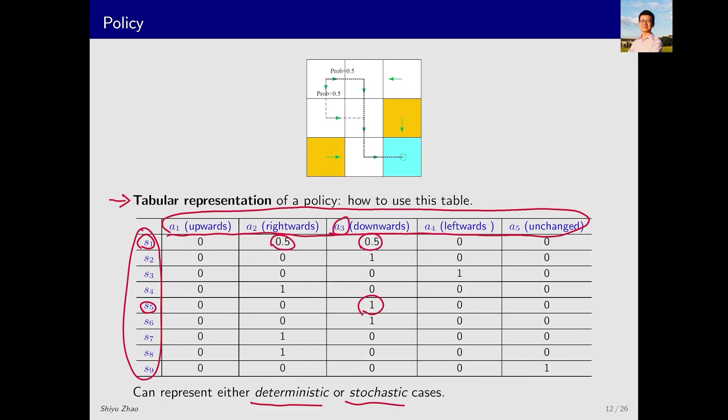Furthermore, I'll explain how policies are executed in practice. If there is a 0.5 probability for taking action A2 and a 0.5 probability for taking action A3, how is this implemented in programming? The process is quite simple. We can do a random sampling from 0 to 1 using a uniform distribution. If the sampled value x falls between 0 and 0.5, then action A2 is taken. If x is between 0.5 and 1, then action A3 is taken. This is the basic idea.